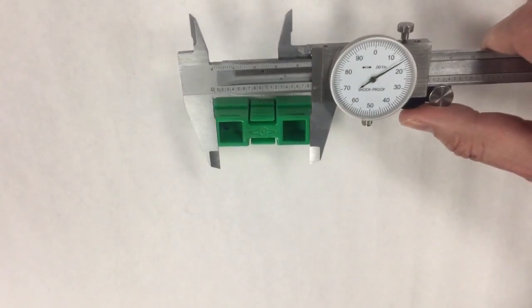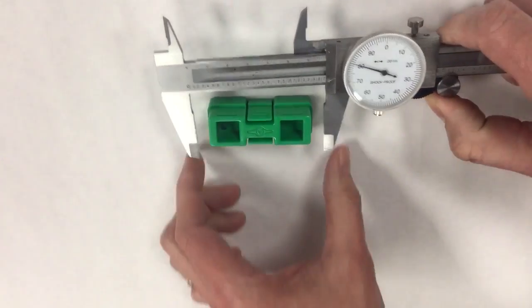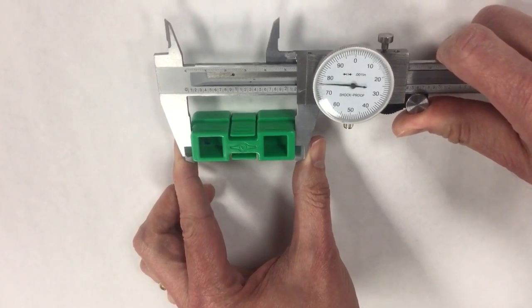When using the dial calipers, you have four ways that you can measure. If I need to measure the outside distance on something, I use the large teeth and measure in between.